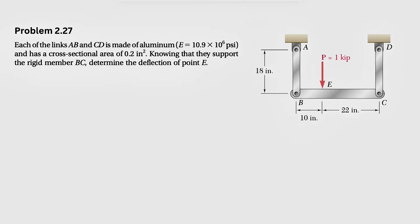We're going to be solving question 27 from the second chapter of Mechanics and Materials by Beer & Johnston. Each of the links AB and CD is made of aluminum. We have the elastic modulus for aluminum and a cross-sectional area of 0.2 inches squared. They support the rigid member BC, and we need to determine the deflection of point E.